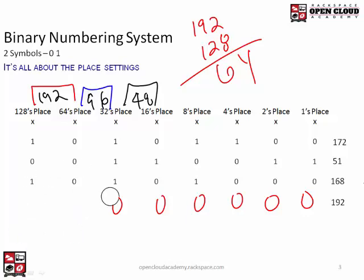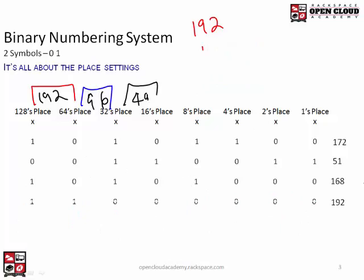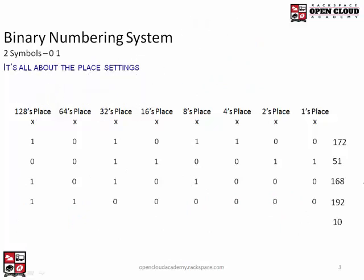Let's do one more — let's do 10. That's an easy one. 10 would be 0, 0, 0, 0 — then 8 plus 2, and 8 plus 2 where I come from is 10. That should be it. So that is converting decimal numbers to binary — another very important skill.